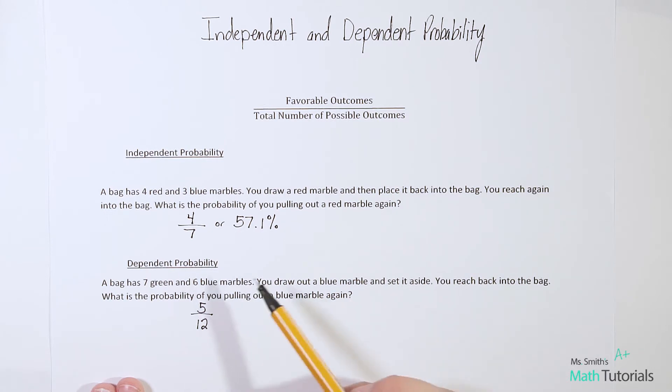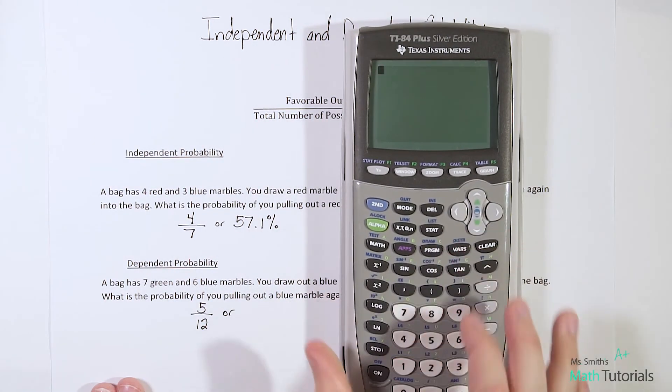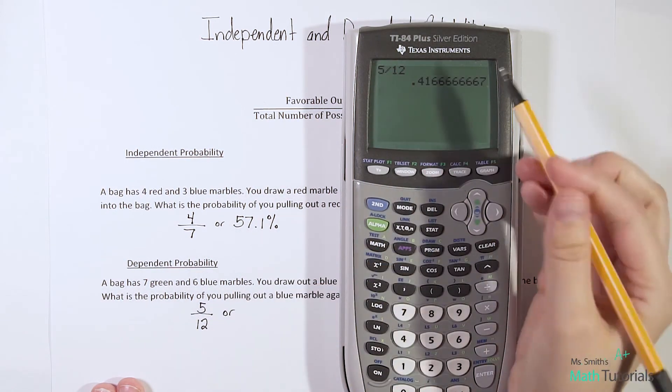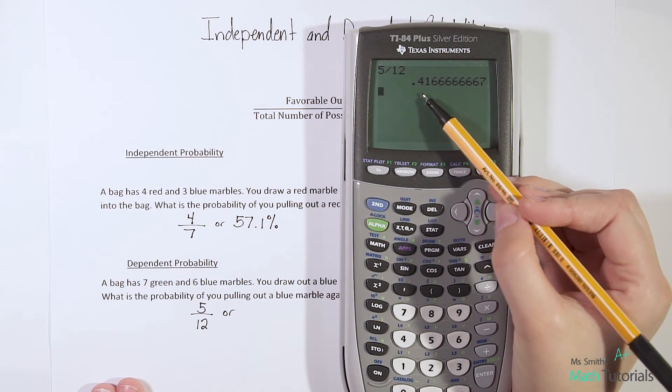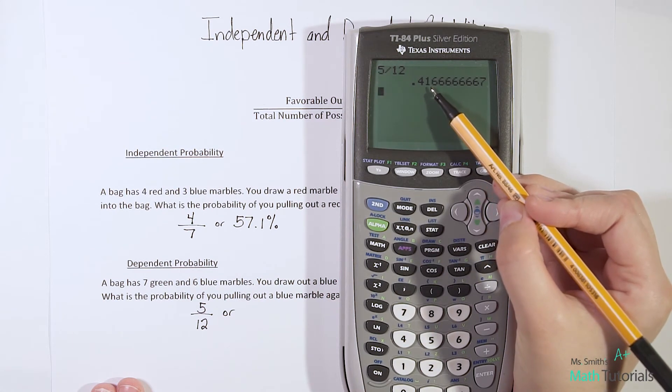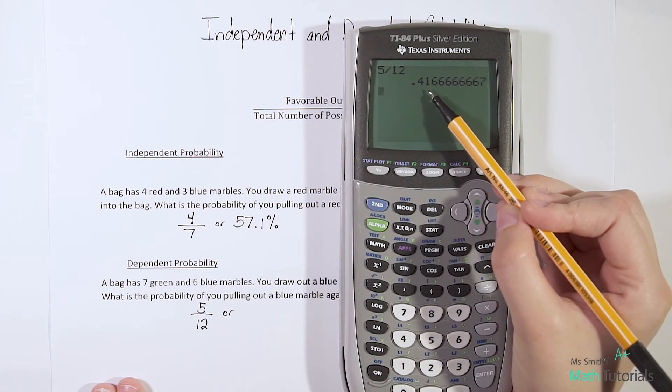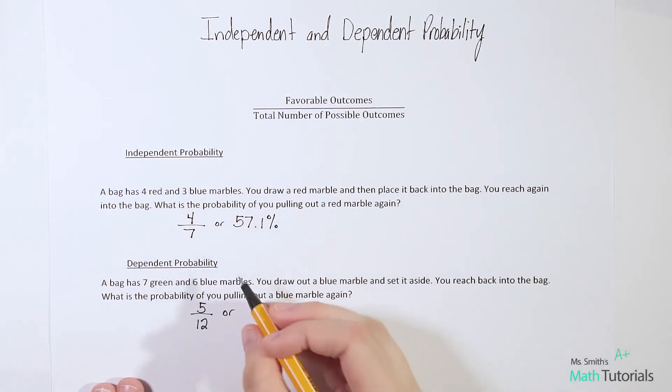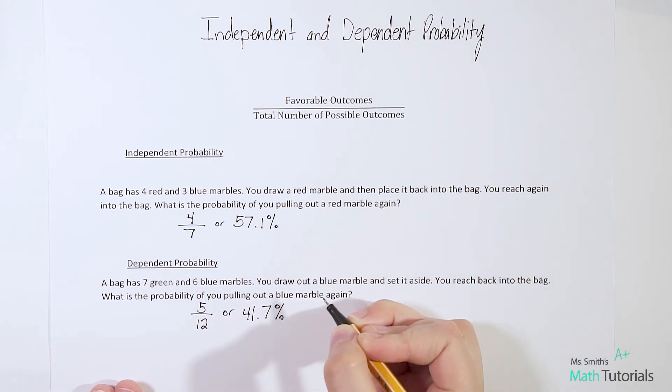Okay. So some of your teachers would be totally fine with you leaving this as a fraction. Some may ask for a percentage. So let's figure out what would five over 12 be as a percent. We get this long decimal. Remember, we take the decimal point, we move it over two to get our percentage. So we'd call that 41.7%.